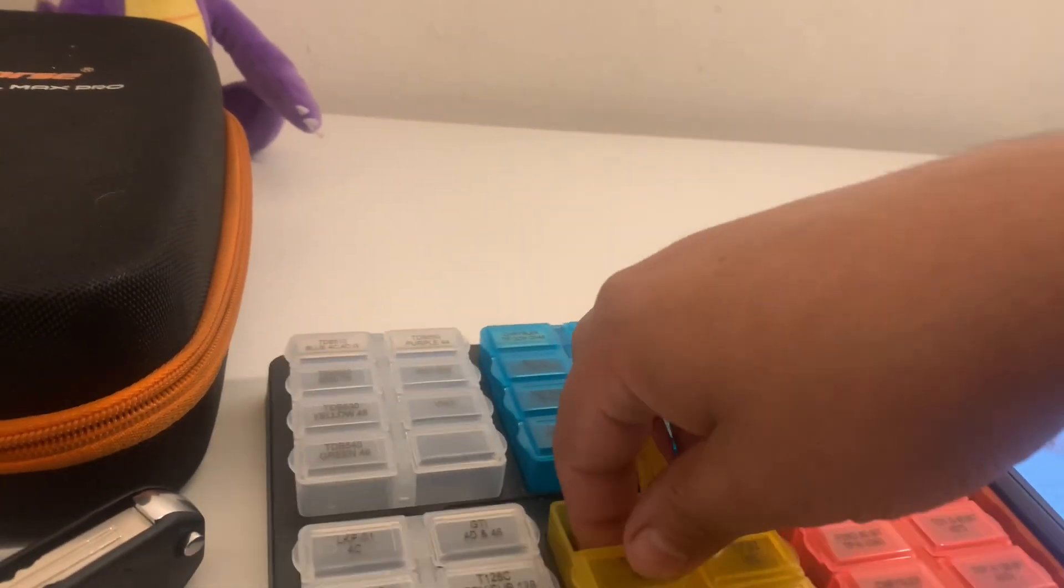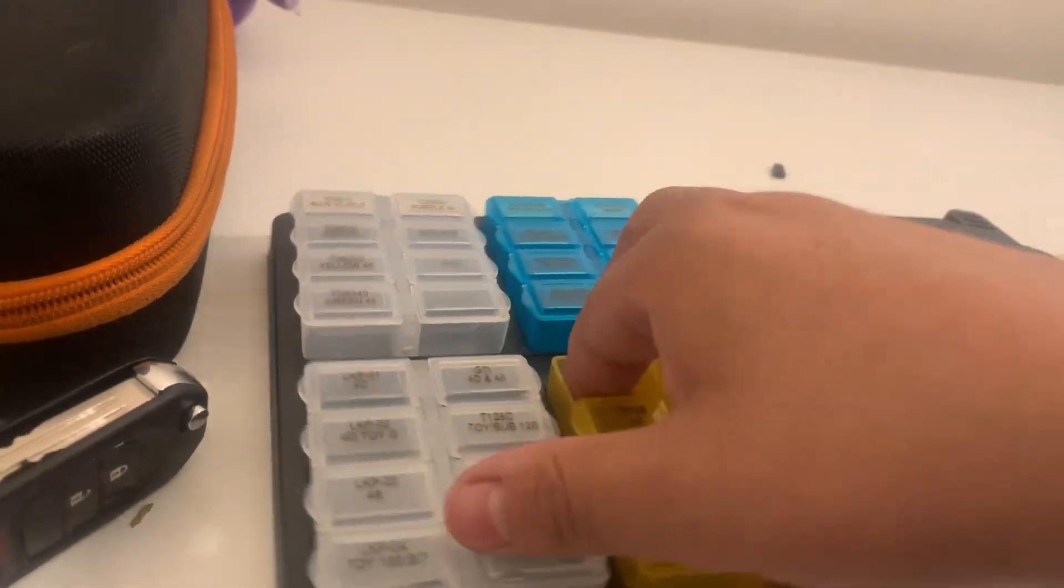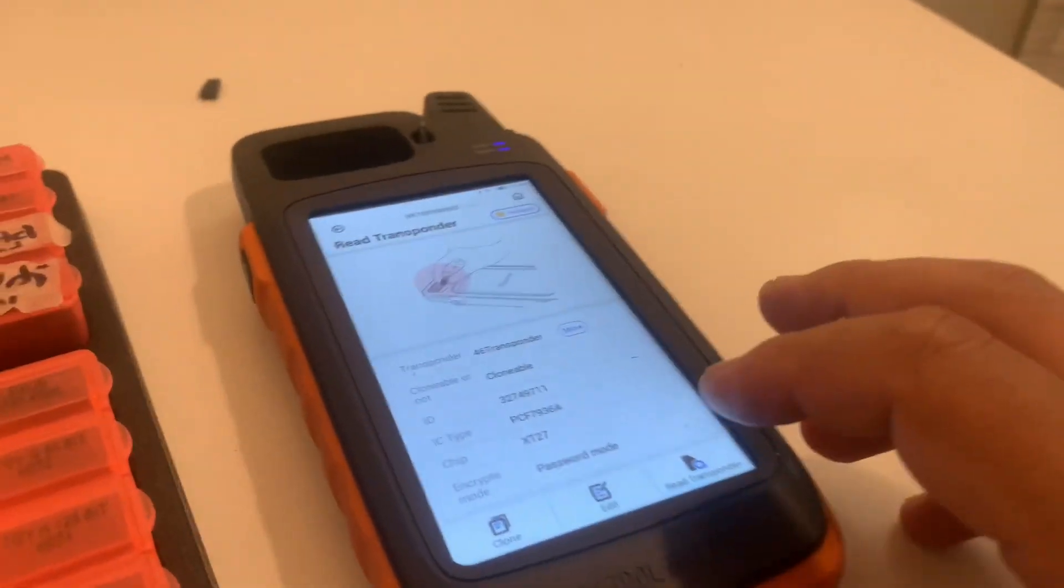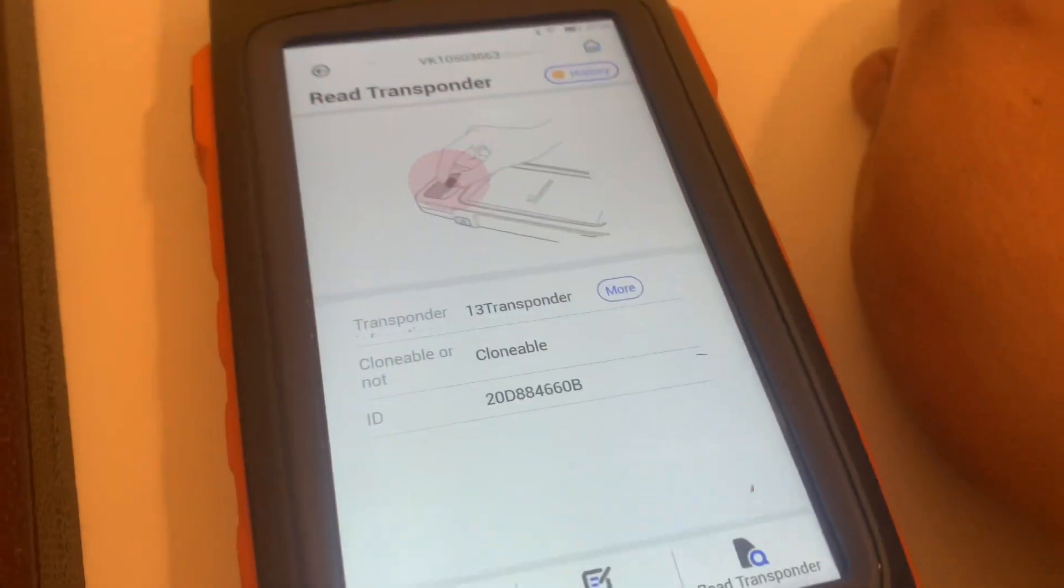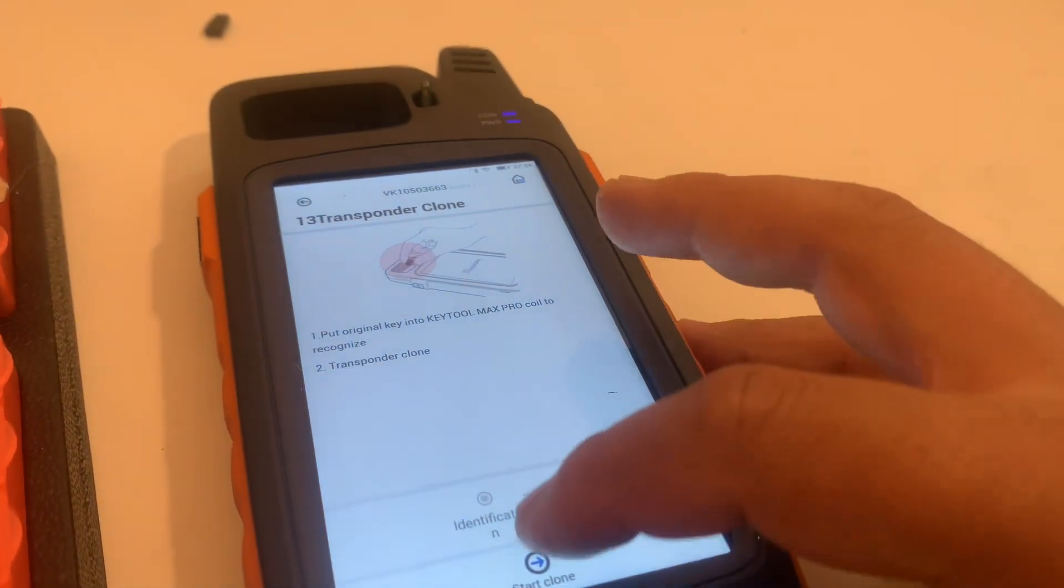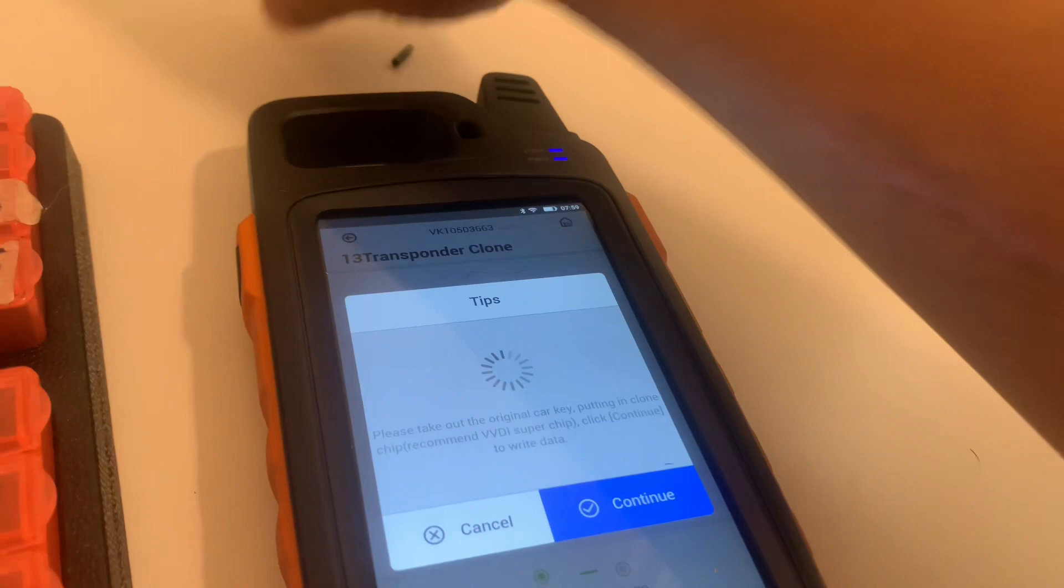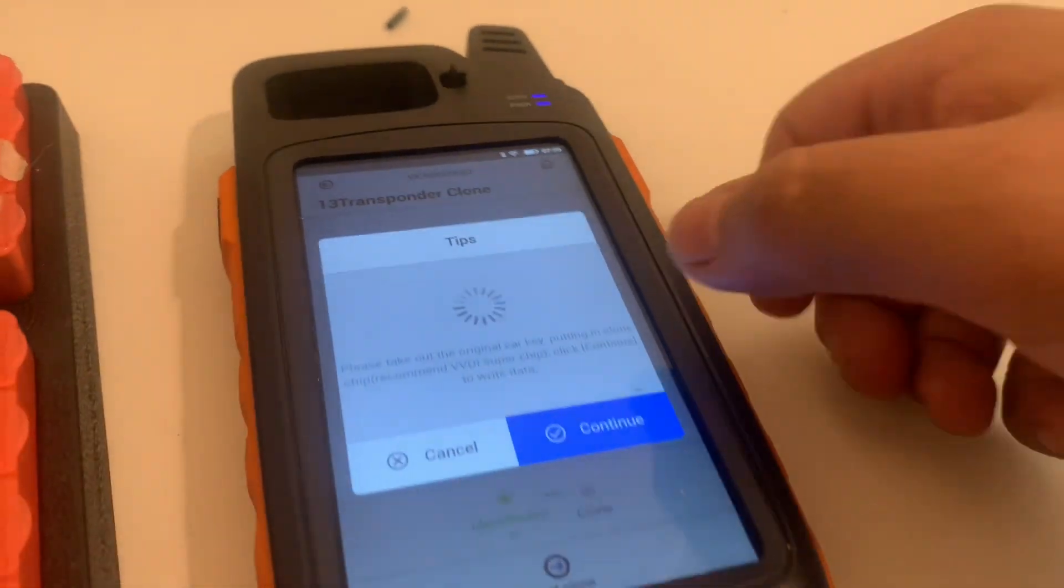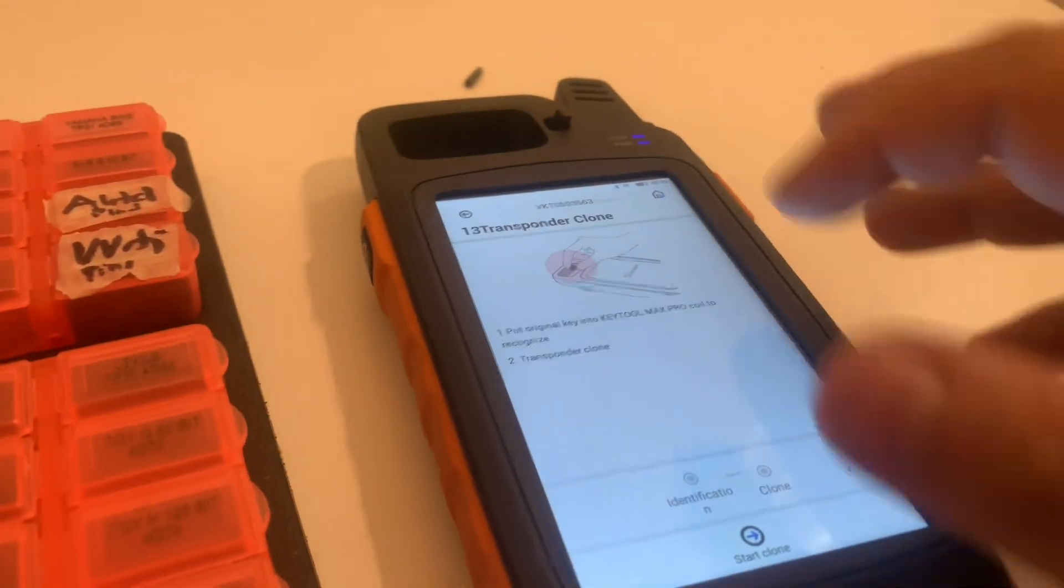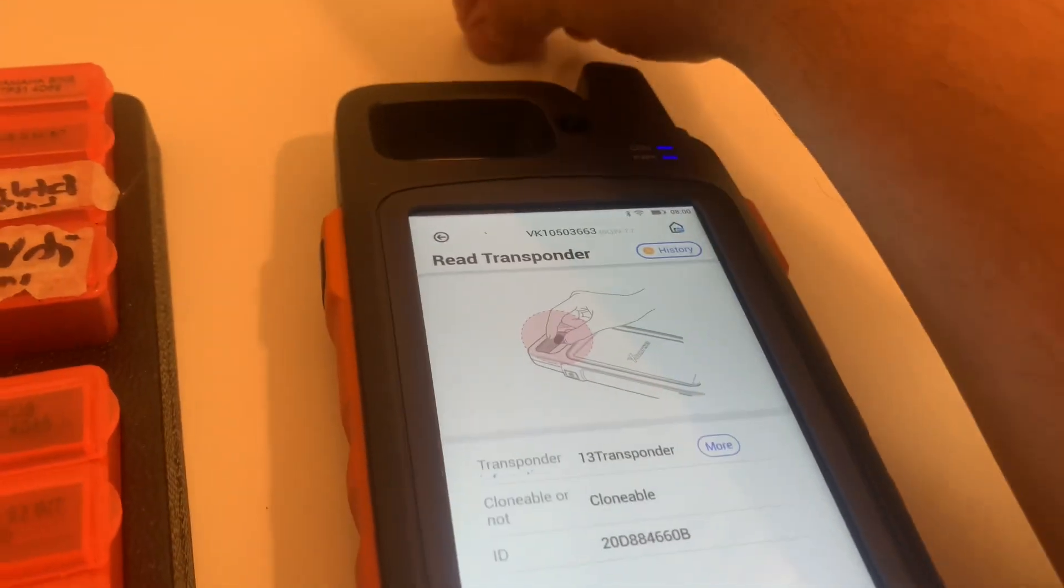Okay, so I'm going to use this. It's kind of hard to grab this chip. All right, so read transponder. It's a 13 chip. So I had to do this recently. Now put in the super chip. Complete. Now I'll read transponder. And now it has the same properties as this chip, this super chip.